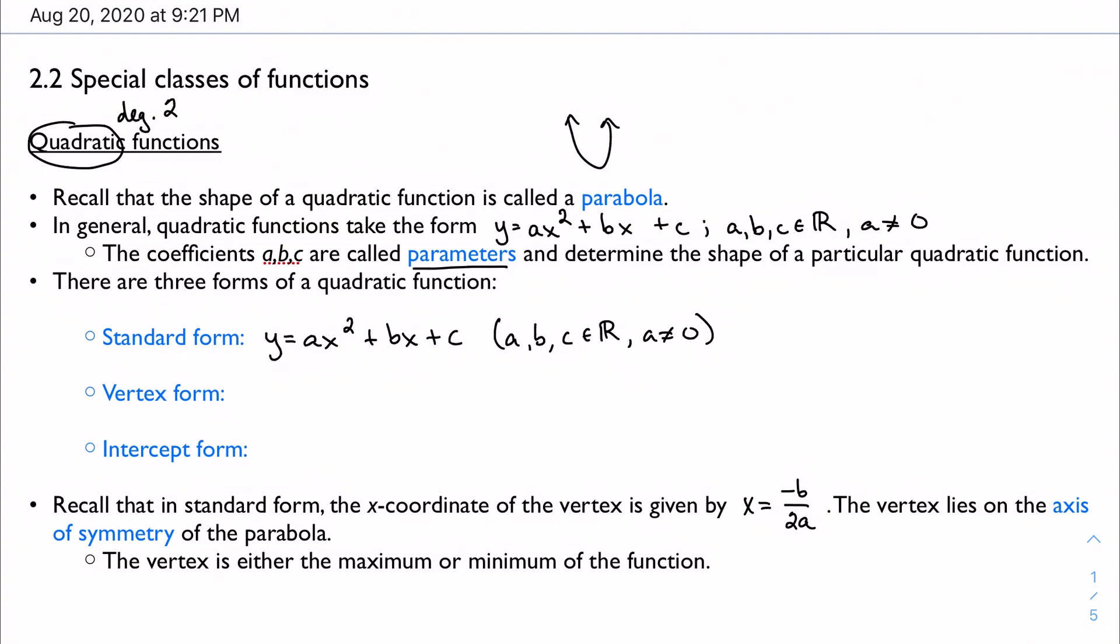I could also look at it in vertex form, which, as the name implies, is actually going to give me the vertex of the parabola. So I've got this a times (x minus h) squared plus k. And the important thing about vertex form is that the point (h,k) is the vertex of the parabola. We'll talk more about that vertex in a minute.